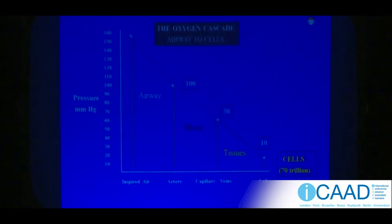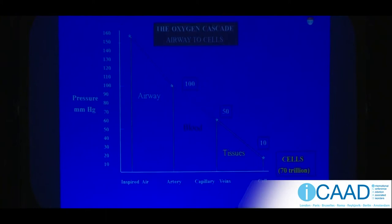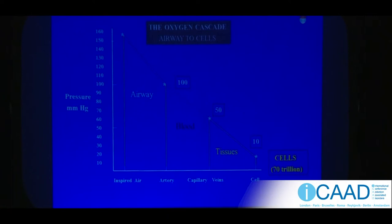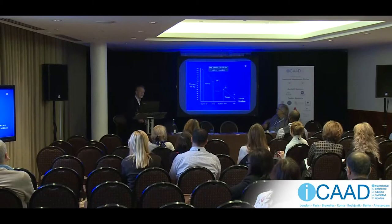Your brain contains somewhere around 100 billion cells — I'm not quite sure who counted them. There are apparently 70 trillion cells in your body. Going down this cascade — called the oxygen cascade — we go from roughly 160 down to 10 units of oxygen in the cells.